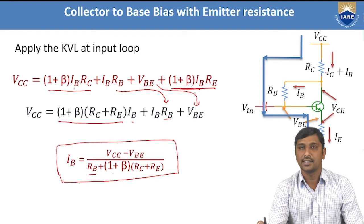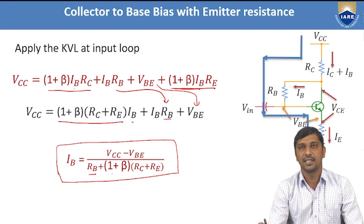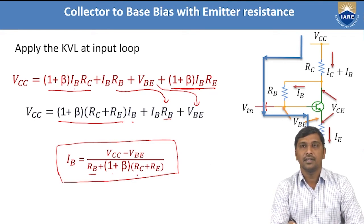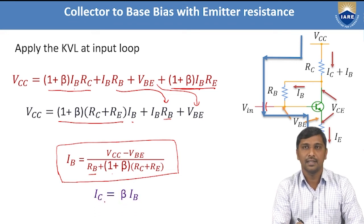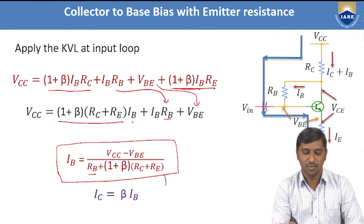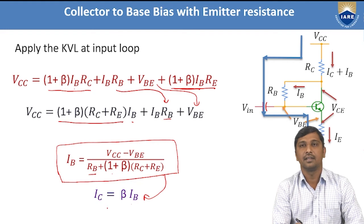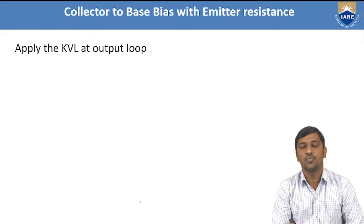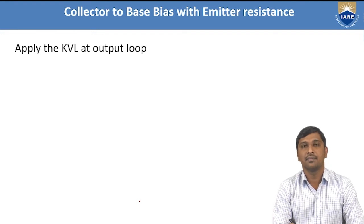The collector current IC = β·IB. Just substitute the IB expression to determine the collector current. Another Q-point parameter is the output voltage VCE, so we also need to apply a KVL loop at the output side of this collector-to-base bias with emitter resistance configuration.